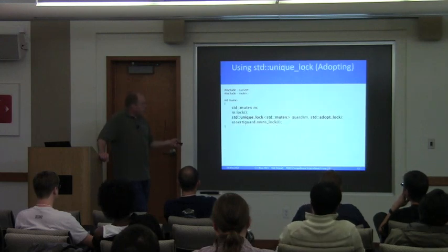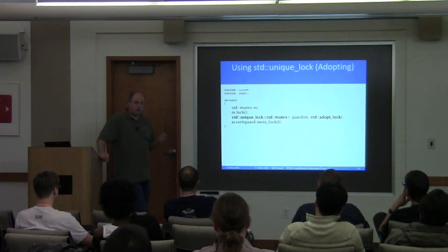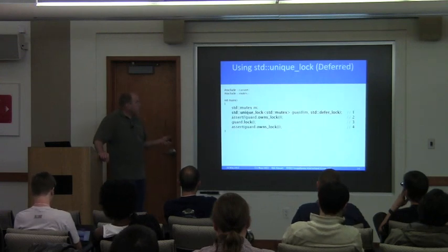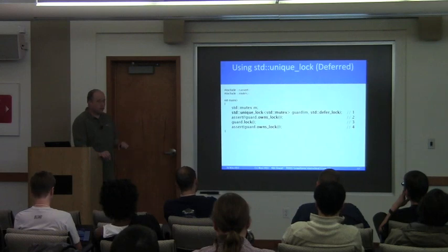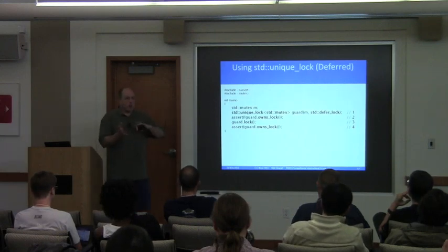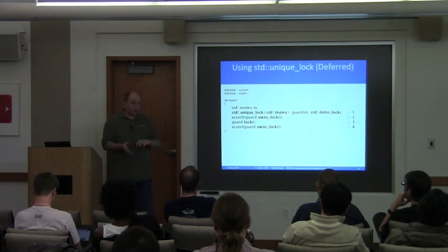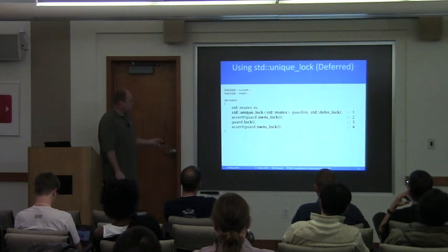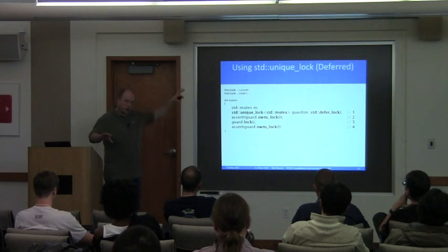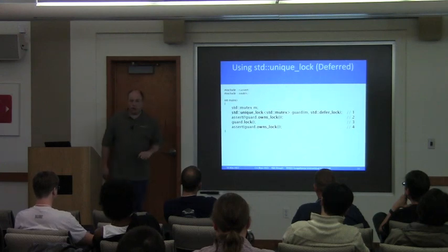Another constructor for unique_lock is std::adopt_lock — just like we saw for lock_guard. The constructor assumes it's locked, so owns_lock returns true. You can also pass std::defer_lock, telling unique_lock to take control of the mutex but not take the lock just now. The destructor will still unlock it later, but we're not locking at first, so owns_lock returns false. Now we can actually lock it through the unique_lock instead of through the mutex itself, and owns_lock returns true.